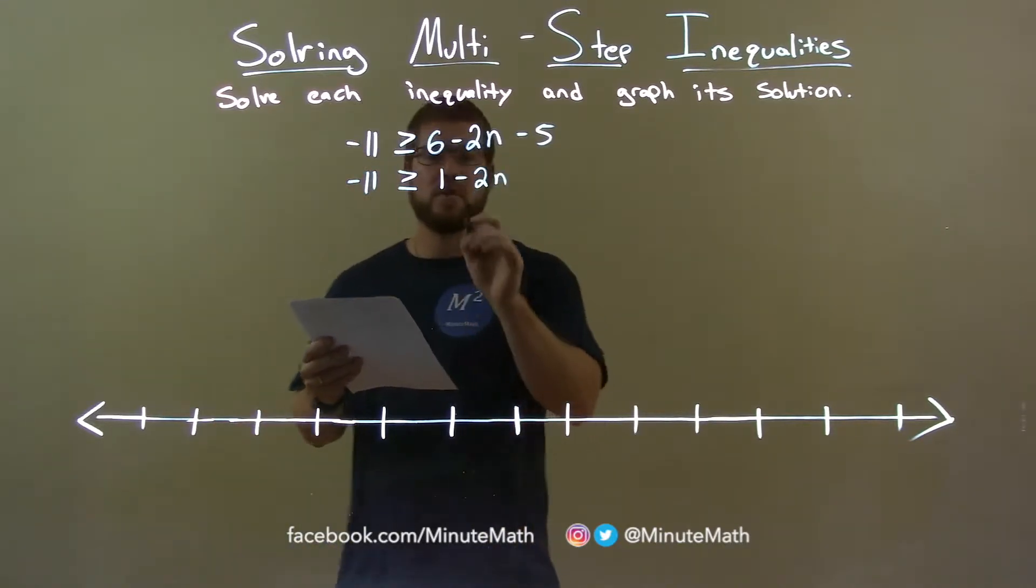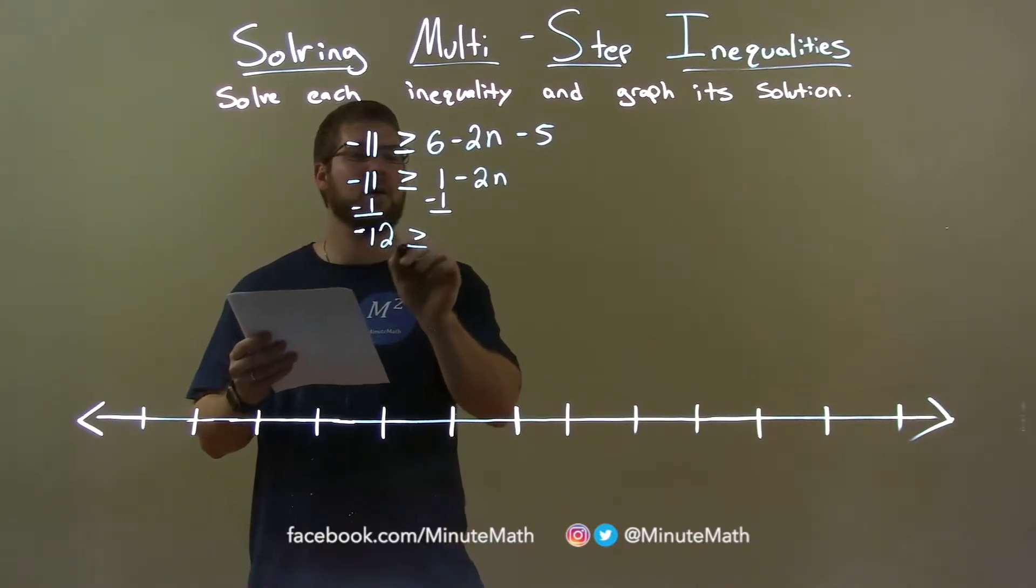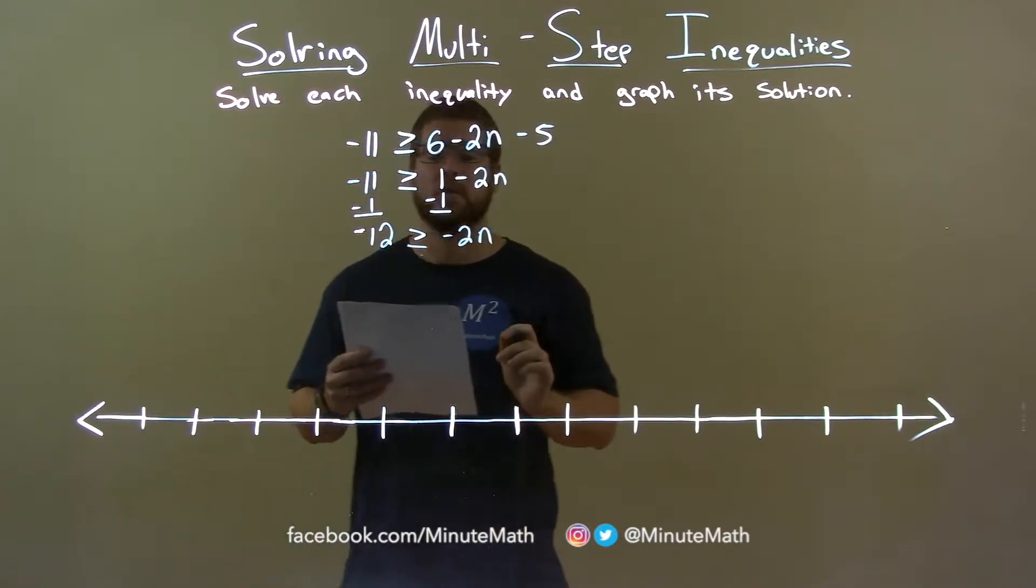So, let's subtract 1 from both sides now. And now we have negative 11 minus 1 is negative 12. Negative 2n is still on the right.